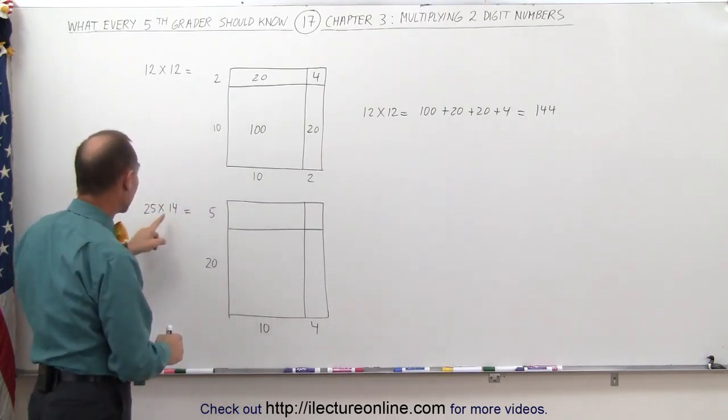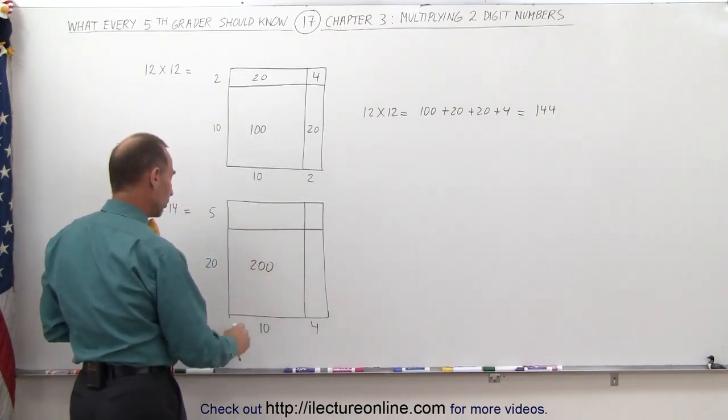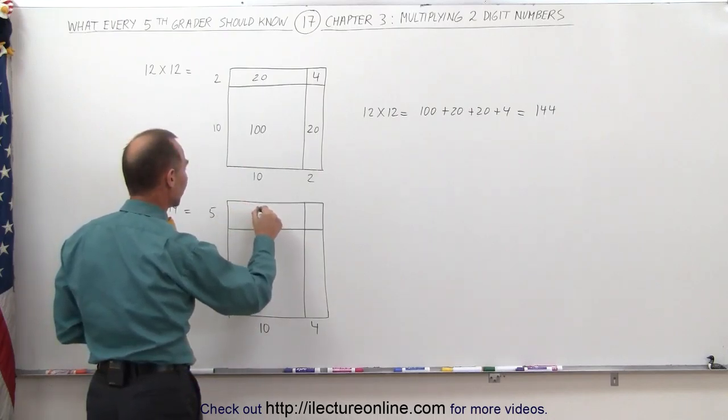So here I'm multiplying the 20 times the 10, that gives me 200. Here I'm going to multiply the 10 times the 5, which gives me 50.